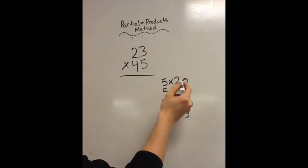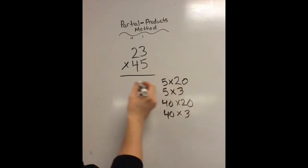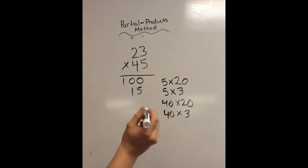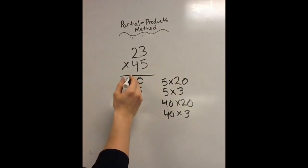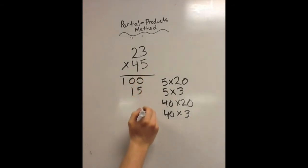Then what we do is we solve. Well, I know that 5 times 2 is 10, so 5 times 20 has to be 100. 5 times 3 is 15. One thing I might add here is you're going to want to make sure that you have all of your digits lined up by place value. So, all of the 1's should go here, the 10's should go here, the 100's here, so on and so forth.